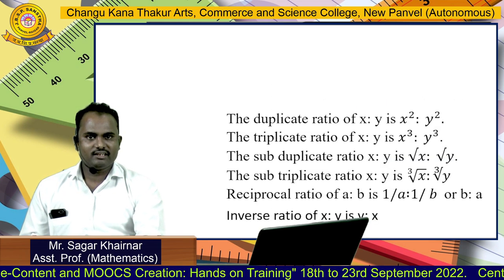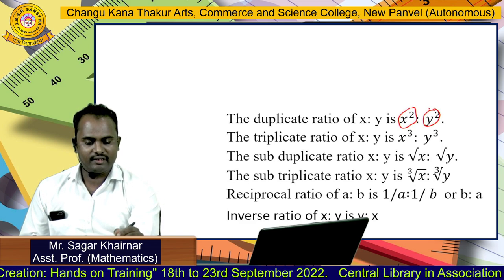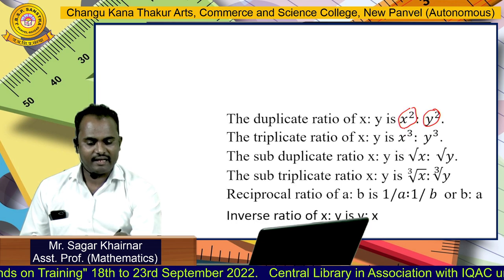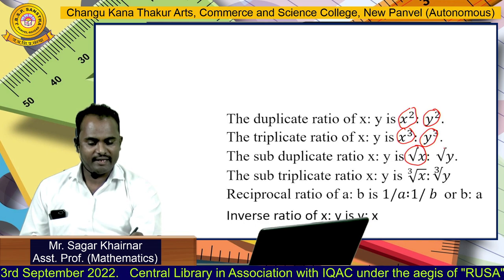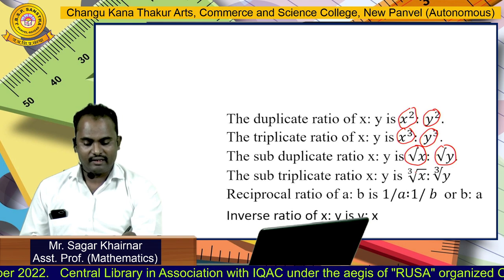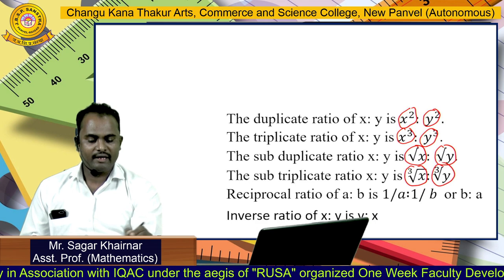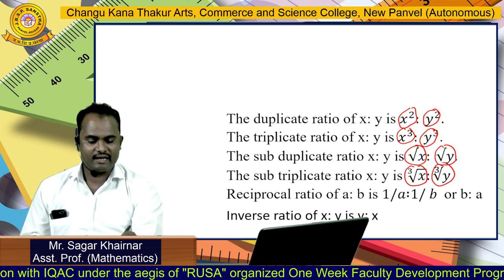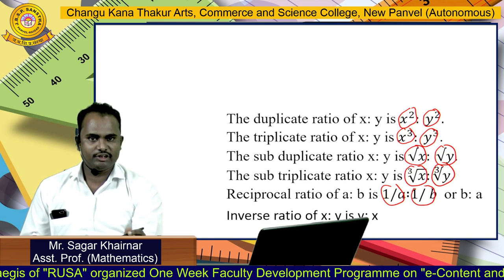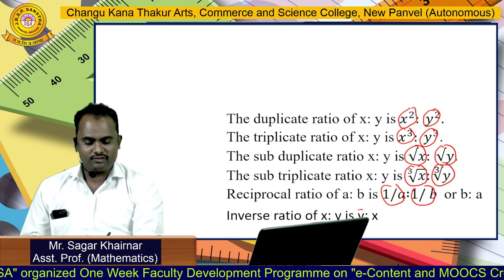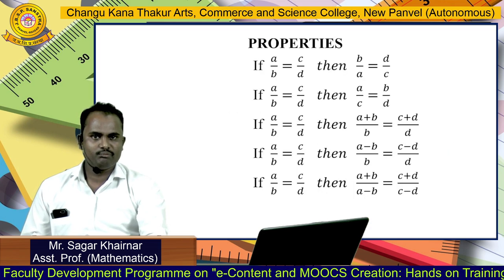Now these are some properties. The duplicate ratio of X as to Y can be written as X square as to Y square. The triplicate ratio can be written as X cube as to Y cube. The subduplicate can be written as square root of X as to square root of Y. The sub-triplicate can be written as 1 upon A as to 1 upon B. The inverse ratio can be written as Y as to X — just change the position of X and Y.